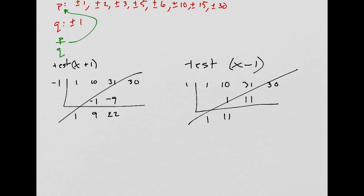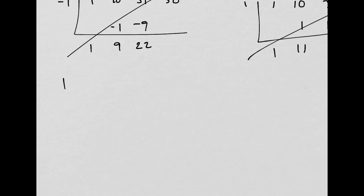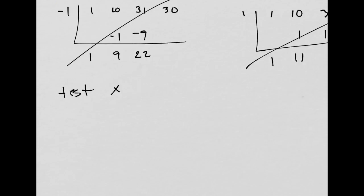Like the x plus 2 and the x plus 3 and the x plus 4. If you don't understand that, you can just check them all, but right now I'm gonna test x plus 2, which means I'm testing negative 2.